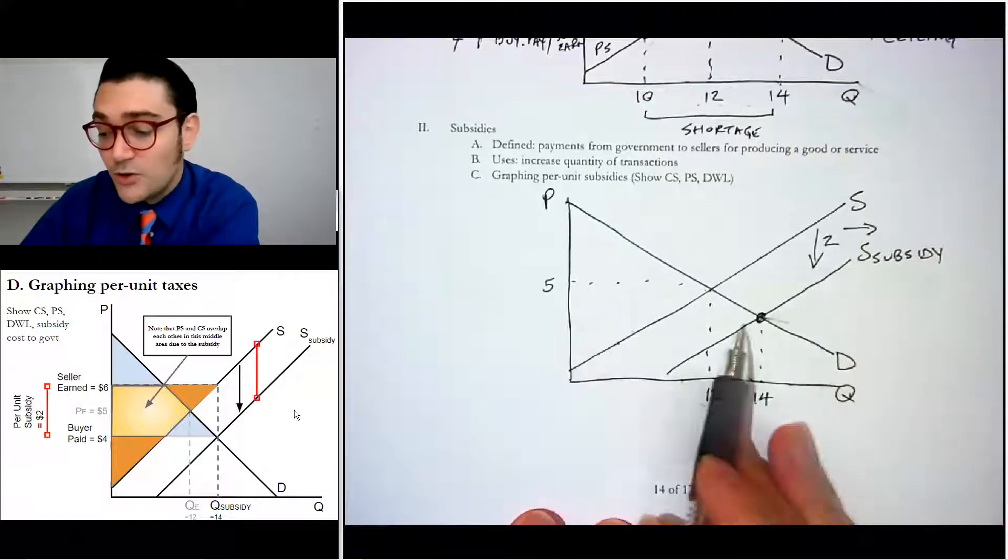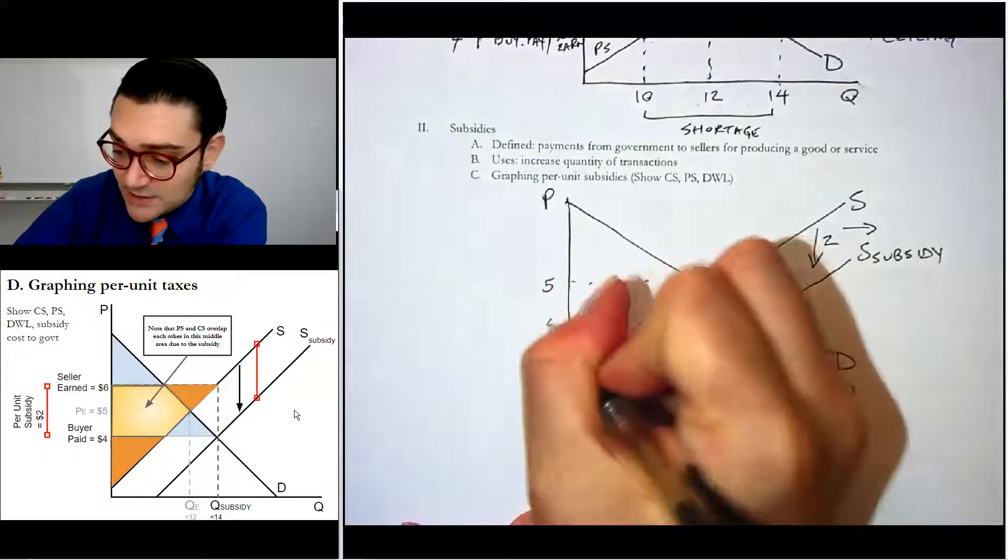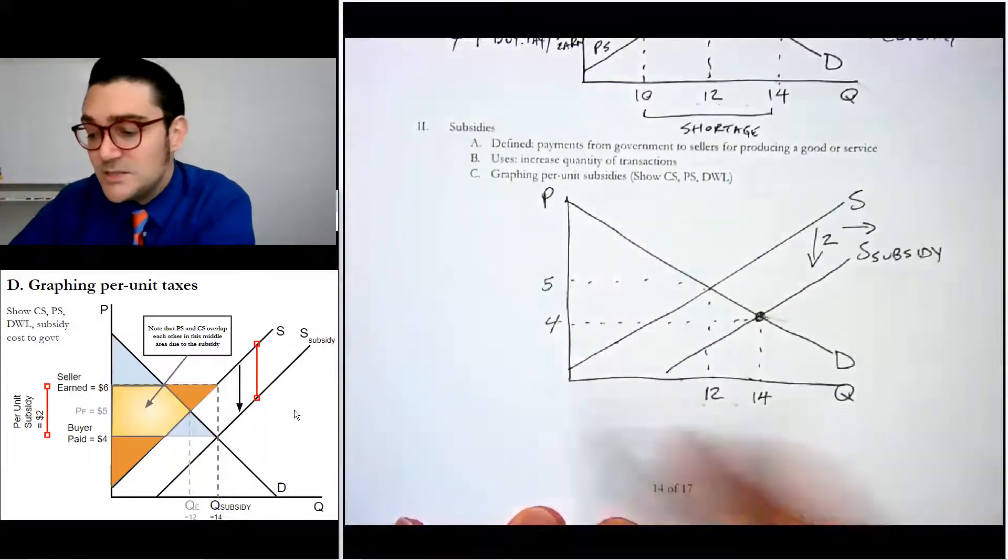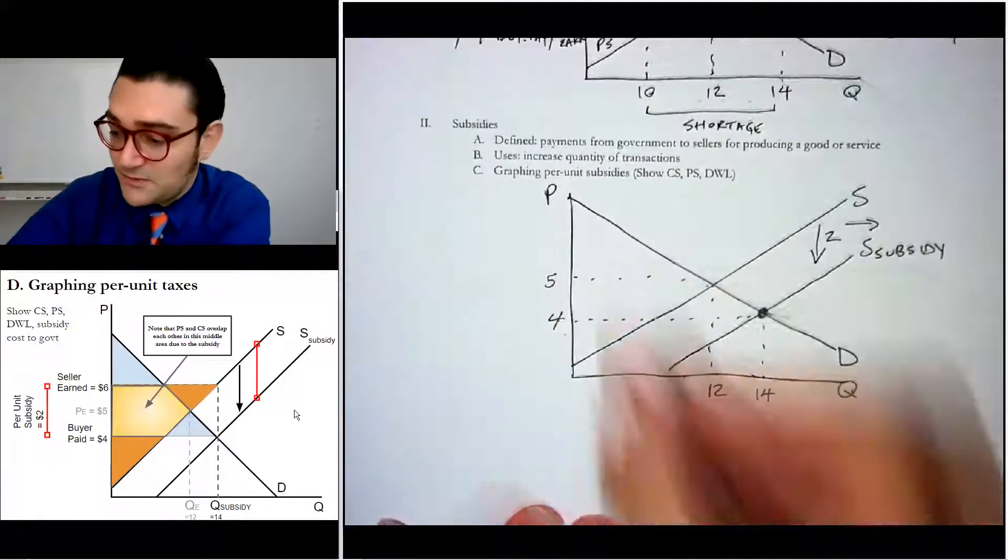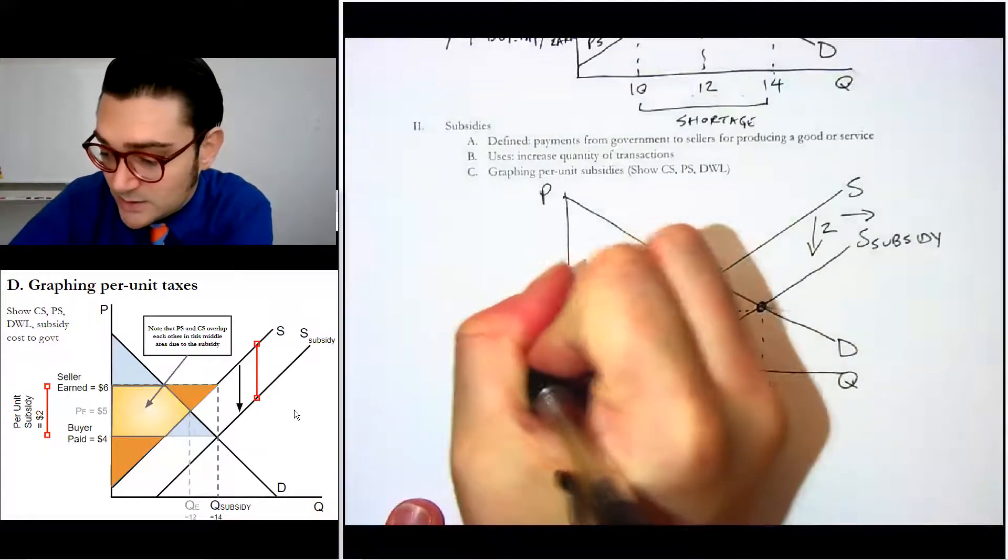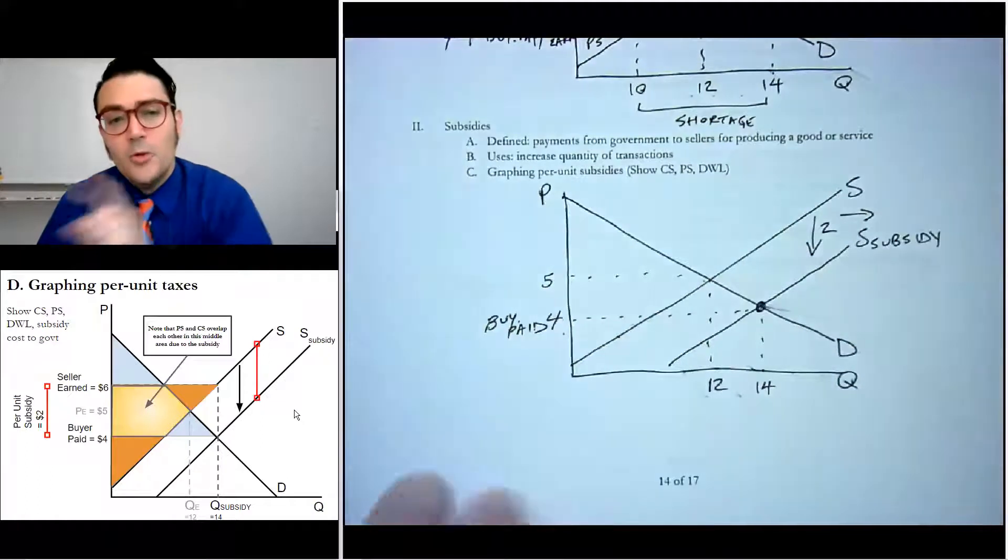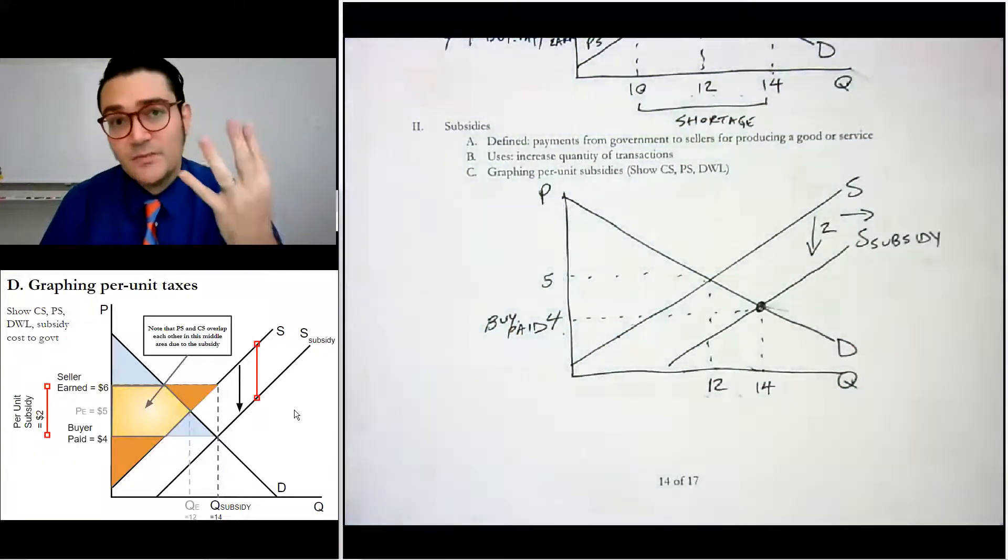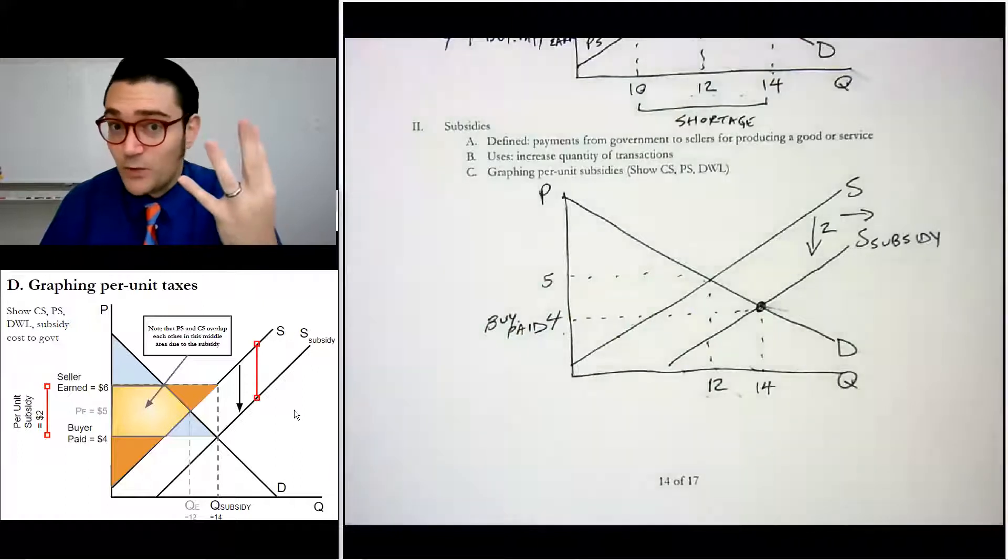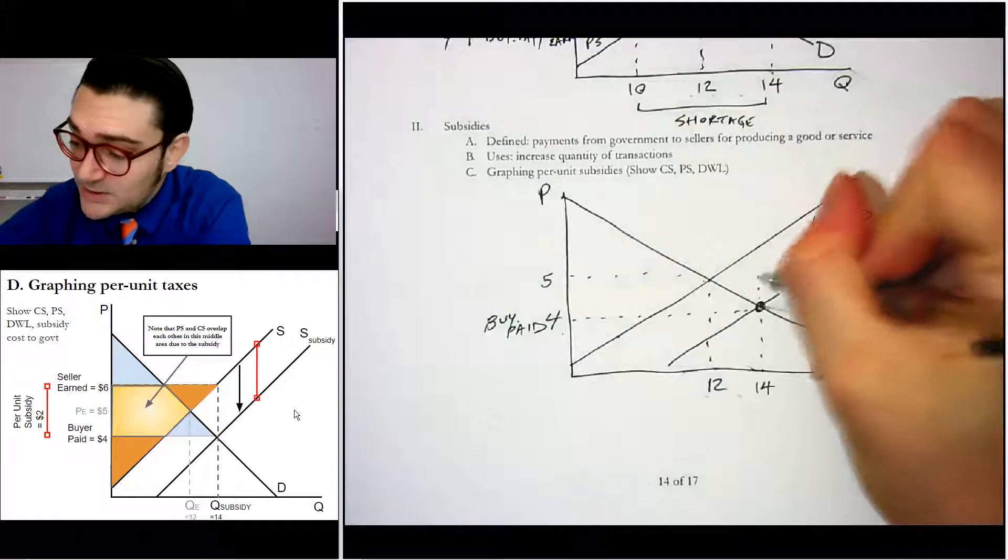And so we'll say that that's over here at 14. Now that's going to be at a price lower than five. And we'll just, for the sake of keeping it simple, we'll say that that's at four. Now this is the price that the buyers pay because this shifted the supply curve down, right? This is the price that the buyers paid, four. But remember that the government provided two additional dollars on top of what the buyers paid.